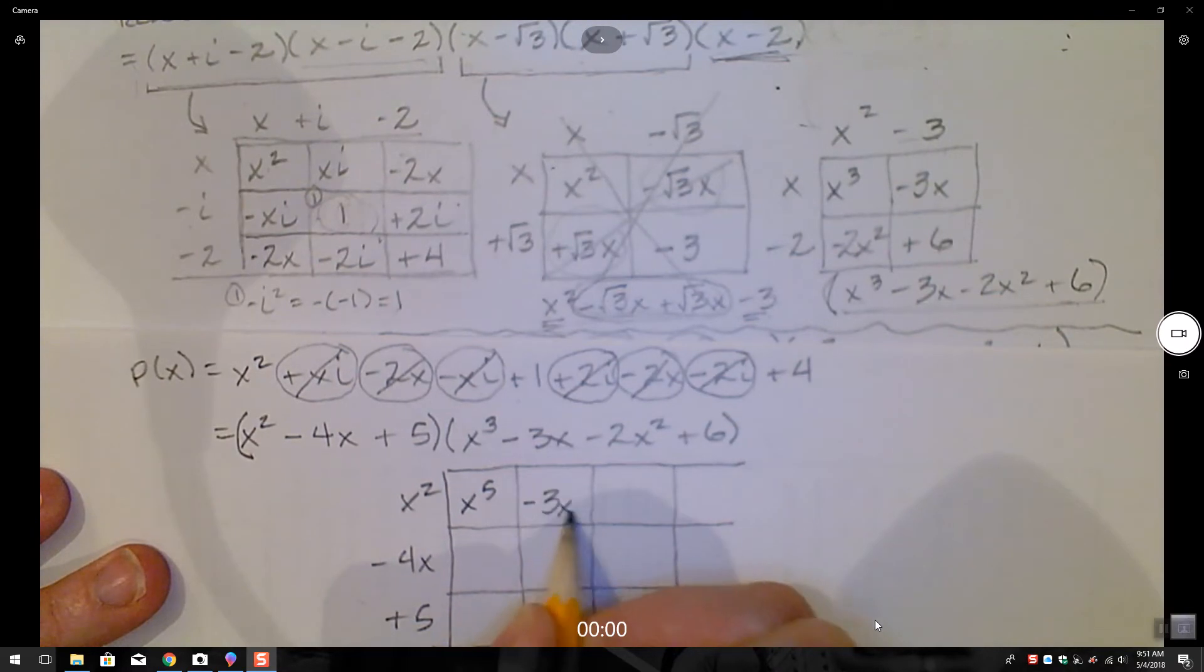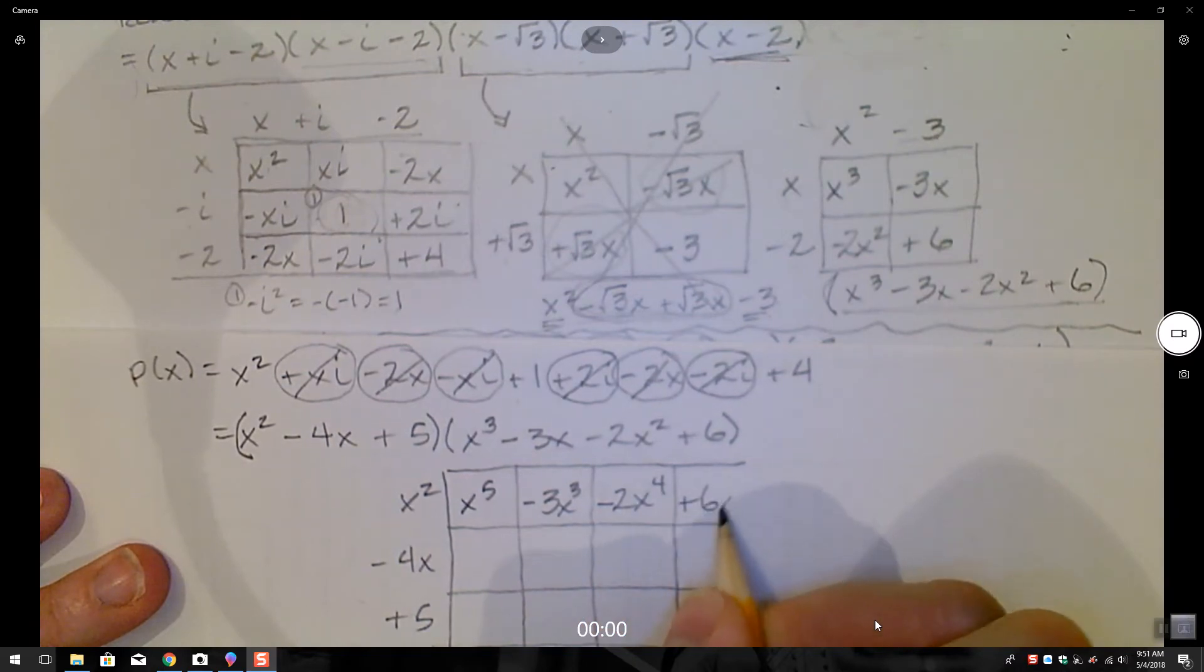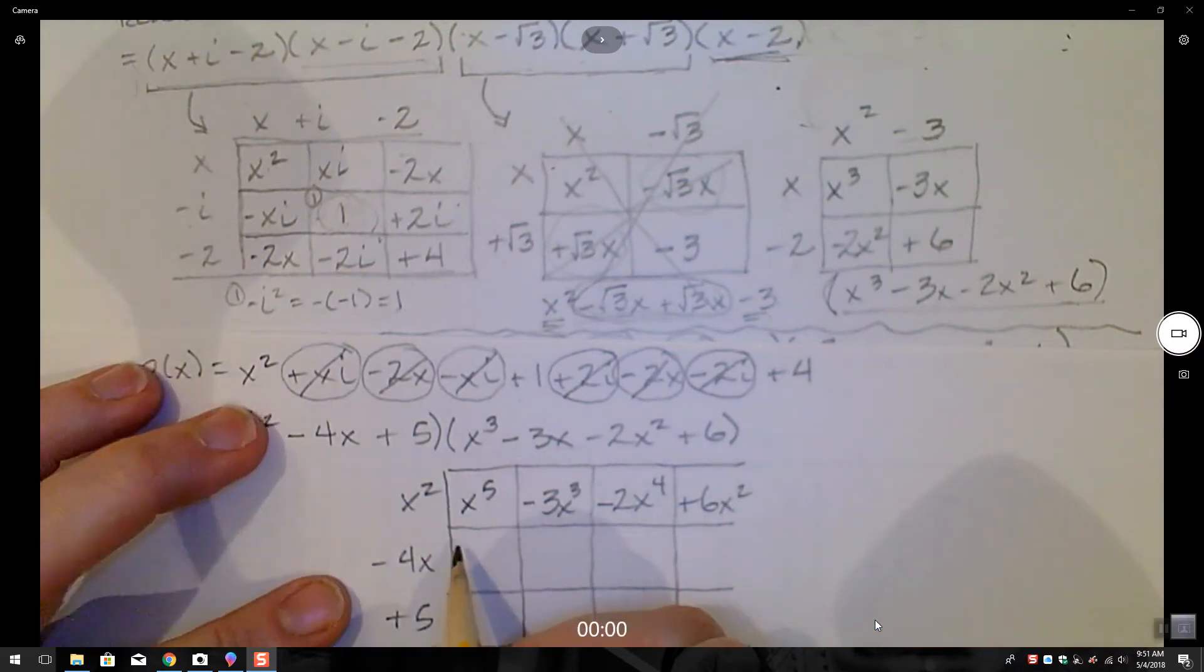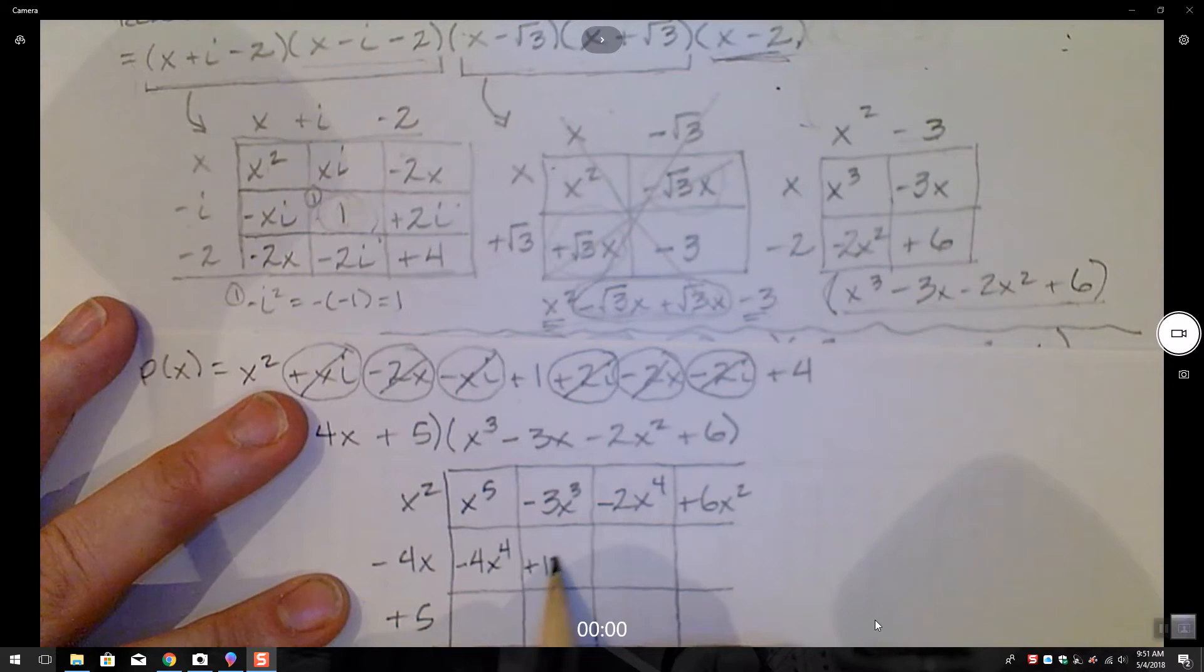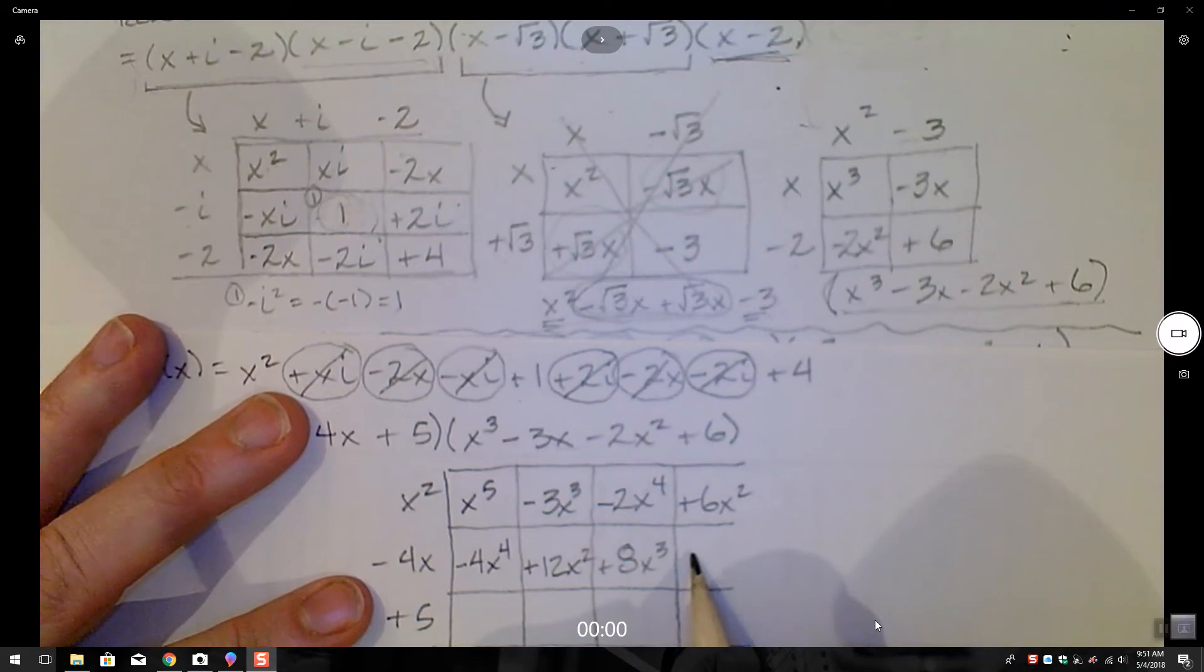Minus 3x to the third minus 2x to the fourth plus 6x squared. And then this is going to be minus 4x to the fourth and a positive 12x squared and a positive 8x to the third and a minus... I'm getting stuck on such simple multiplication.